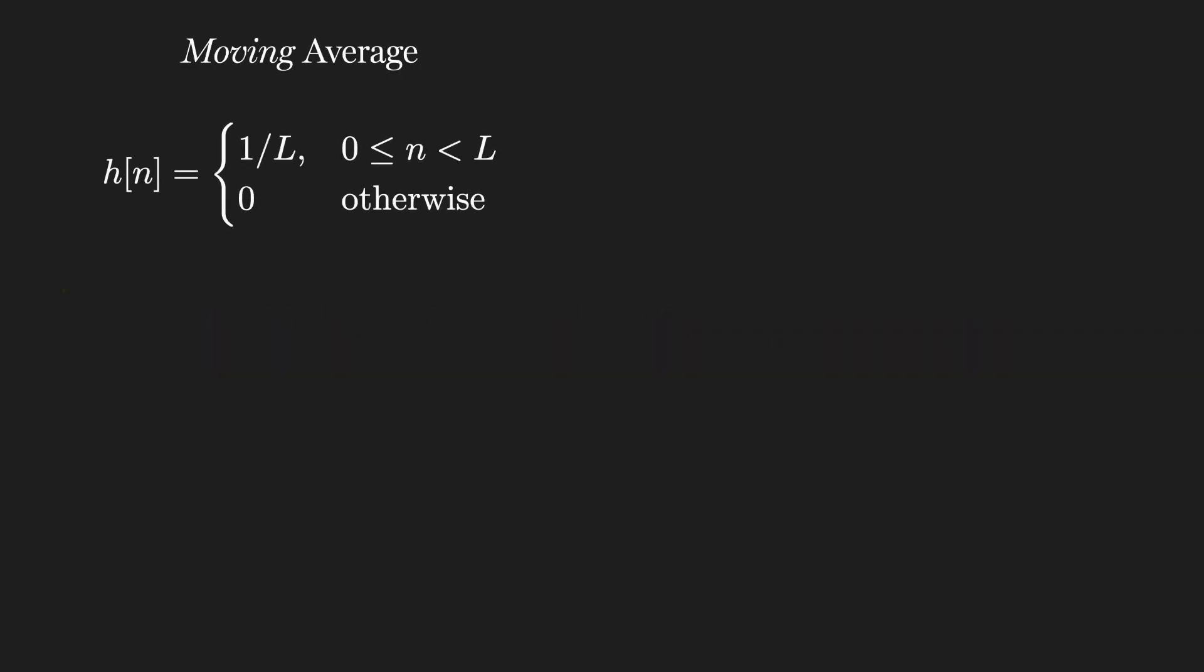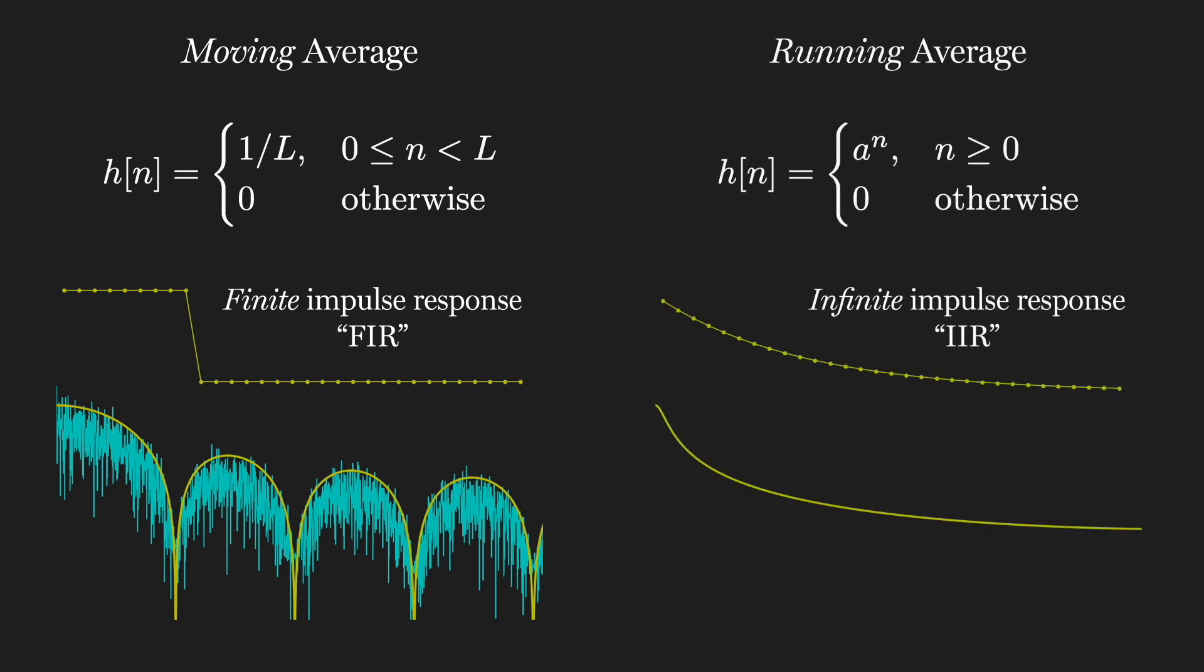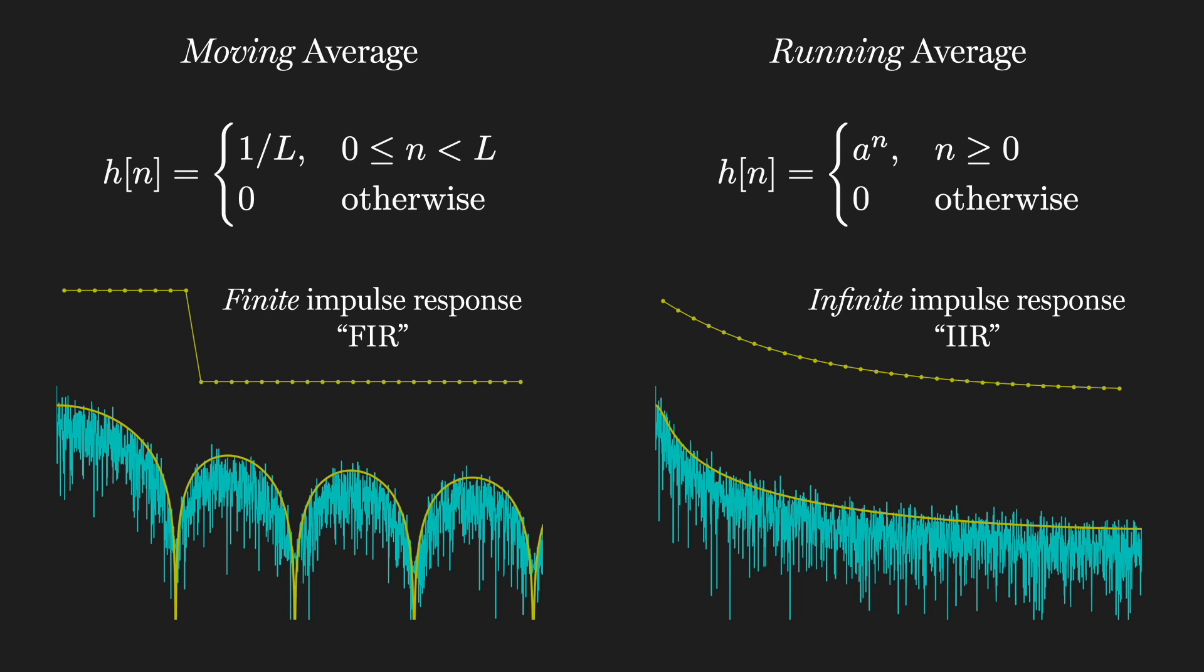At the end of the last video, I said that filtering, that is convolving by the impulse response in time, was equivalent to multiplying the signal and filter representations in frequency. We're going to dive into the details of that statement, and we'll see how we can put that insight to good use.